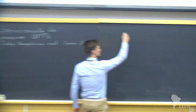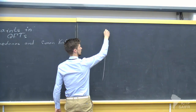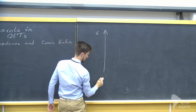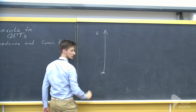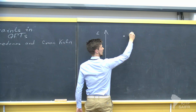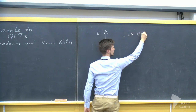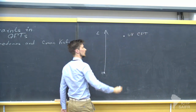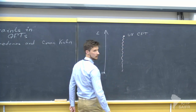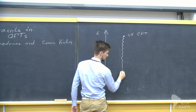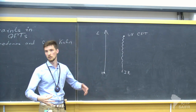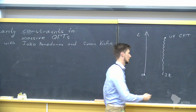Here's the picture of the quantum field theory I have in mind. This is the energy scale, and this is zero energy. I assume that in the UV at high energies I have a CFT — a UV CFT. Then it is deformed and under RG flow it flows to low energies, to the IR. I also consider theories that in the IR are empty.